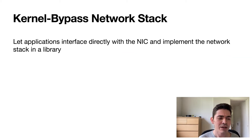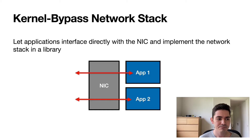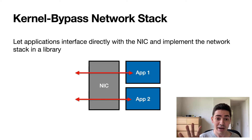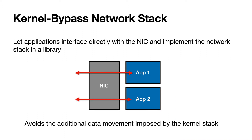As a response, there have been many proposals that advocate for kernel bypass network stacks. In this model, you let applications interface directly with the NIC without going through the kernel. Because you are avoiding this additional data movement, you are able to achieve much better performance.